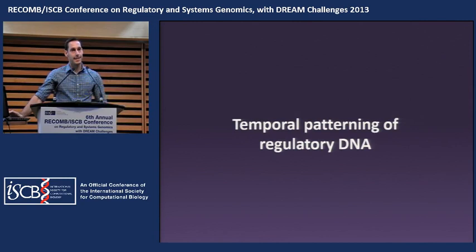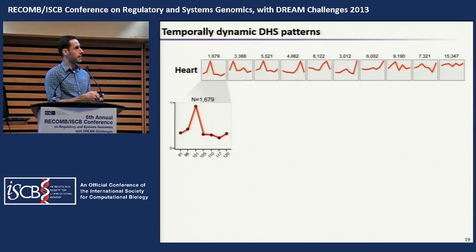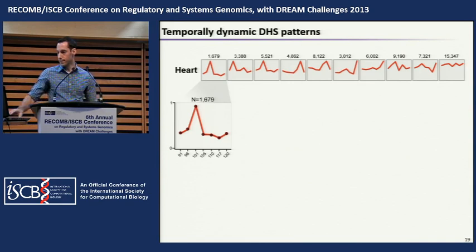Given the unique temporal axis of our data, we asked if we could identify genome-wide temporally active DHSs — those that vary in activity over time. Instead of clustering along the tissue axis, we cluster along the temporal axis looking at DHSs restricted to each organ. Using the same clustering approach as for organ specificity, we find a number of activity patterns — DHSs active early in development, late in development, or constitutively active — shown in a sparkline plot with time on the x-axis and normalized accessibility on the y-axis.